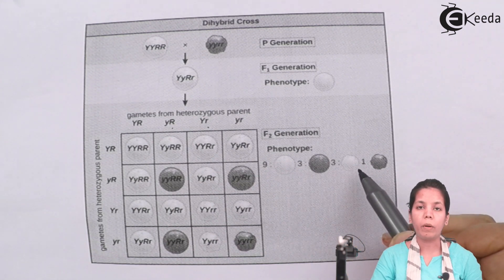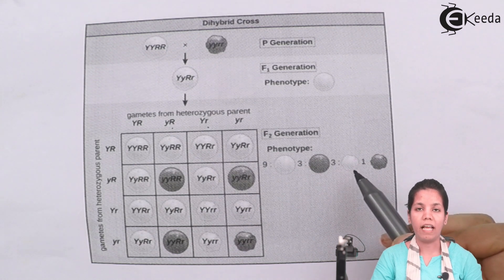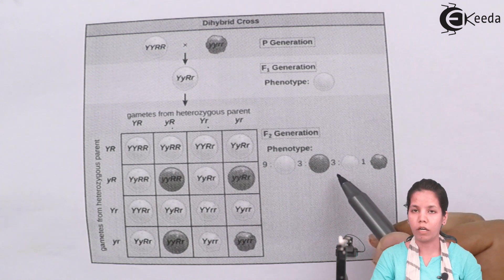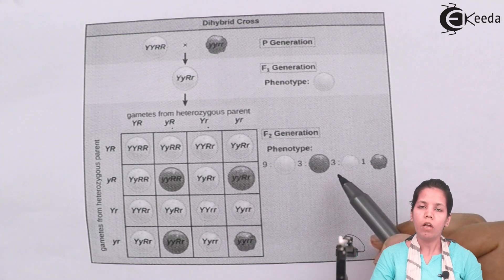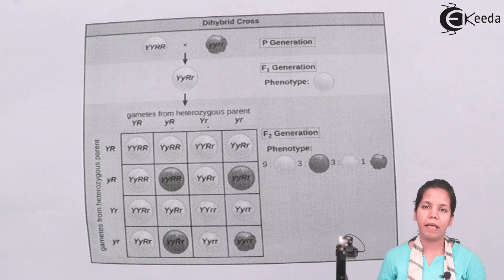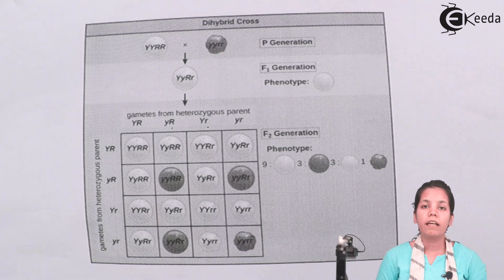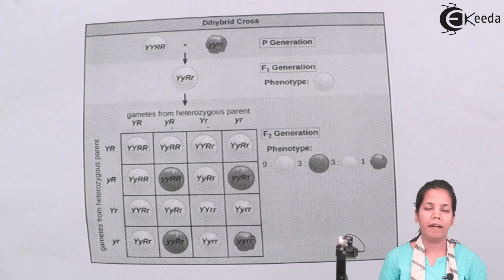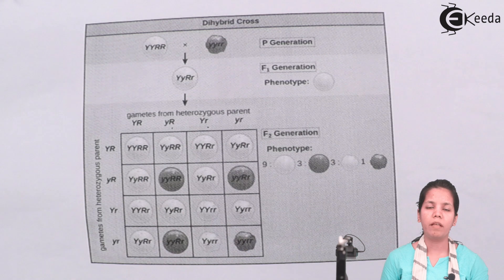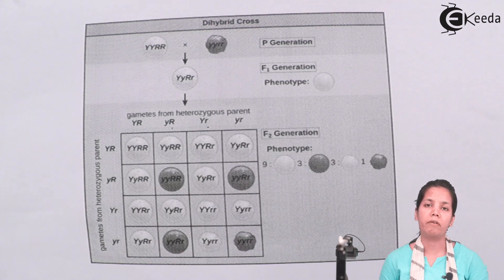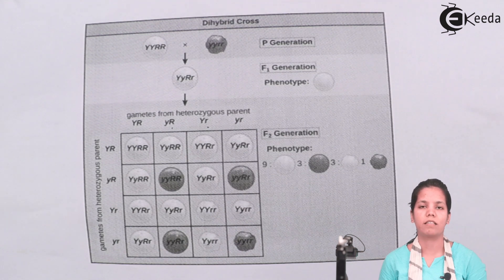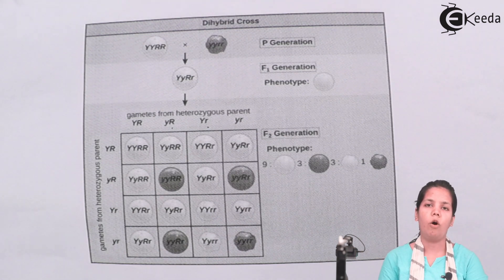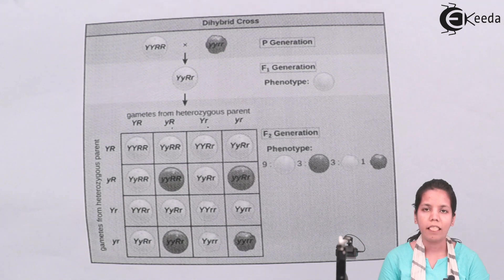The phenotypic ratio obtained after this dihybrid cross was 9:3:3:1. Whenever we do a dihybrid cross, this is the phenotypic ratio that is always observed. Through this experiment, Mendel proved that genes always assort independently — they are never dependent on their homozygous or heterozygous parents. Whatever the parent generation, genes will always assort differently, form different progeny, and give different characteristics. I hope you are all clear with the Law of Independent Assortment. Thank you.